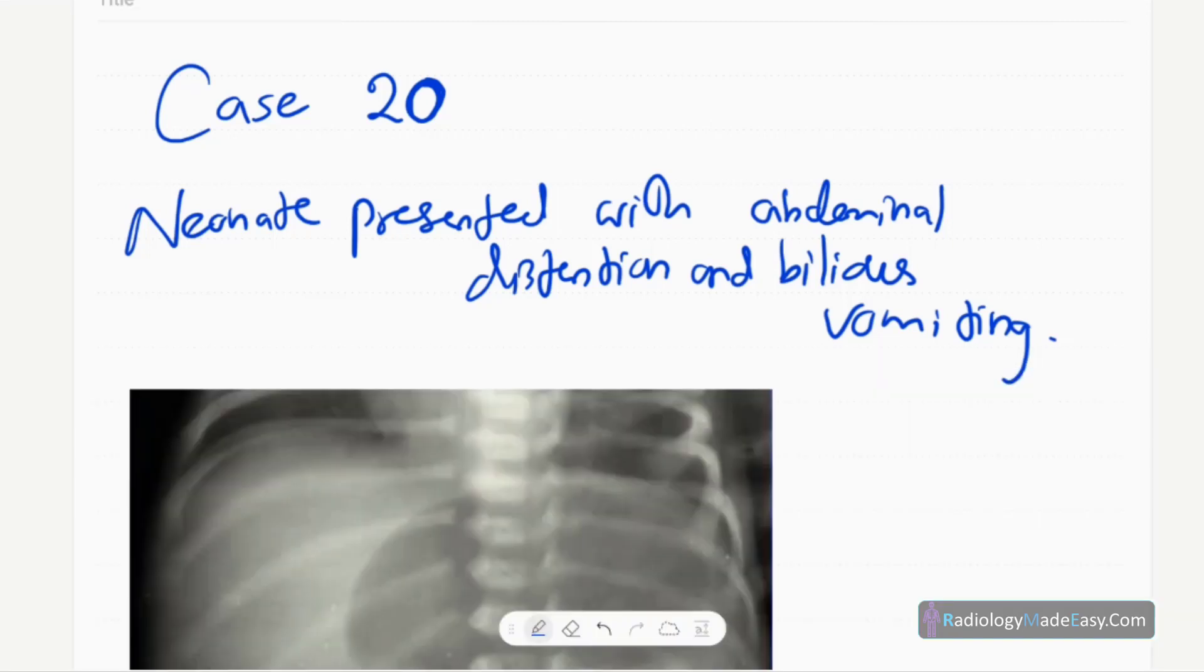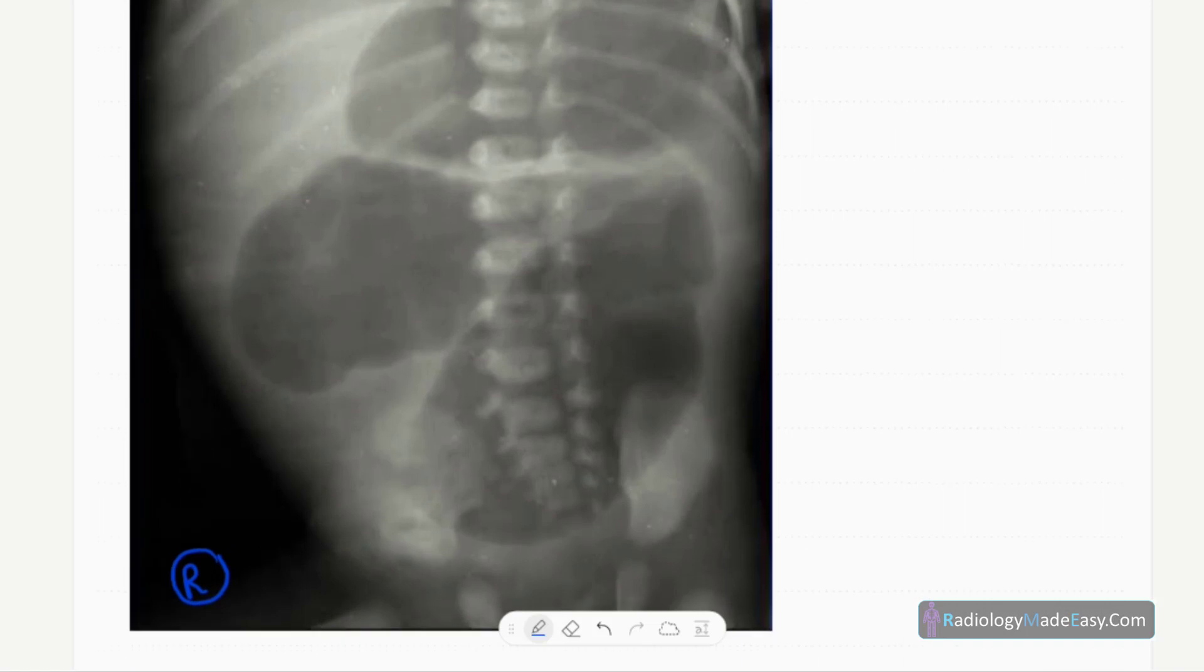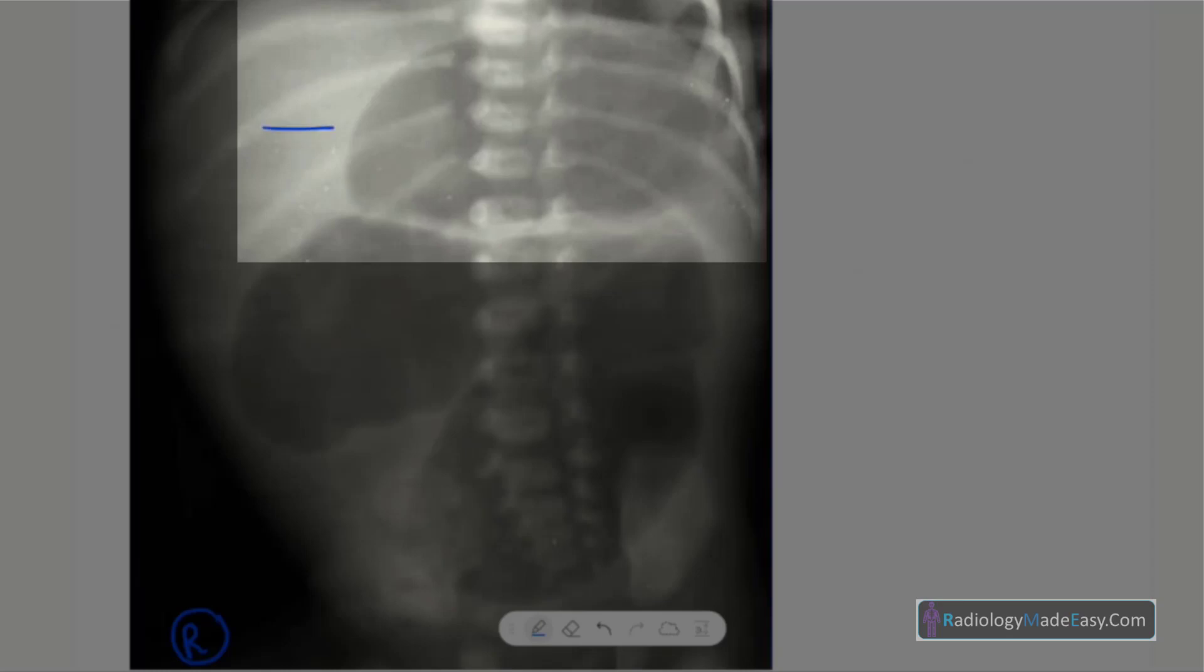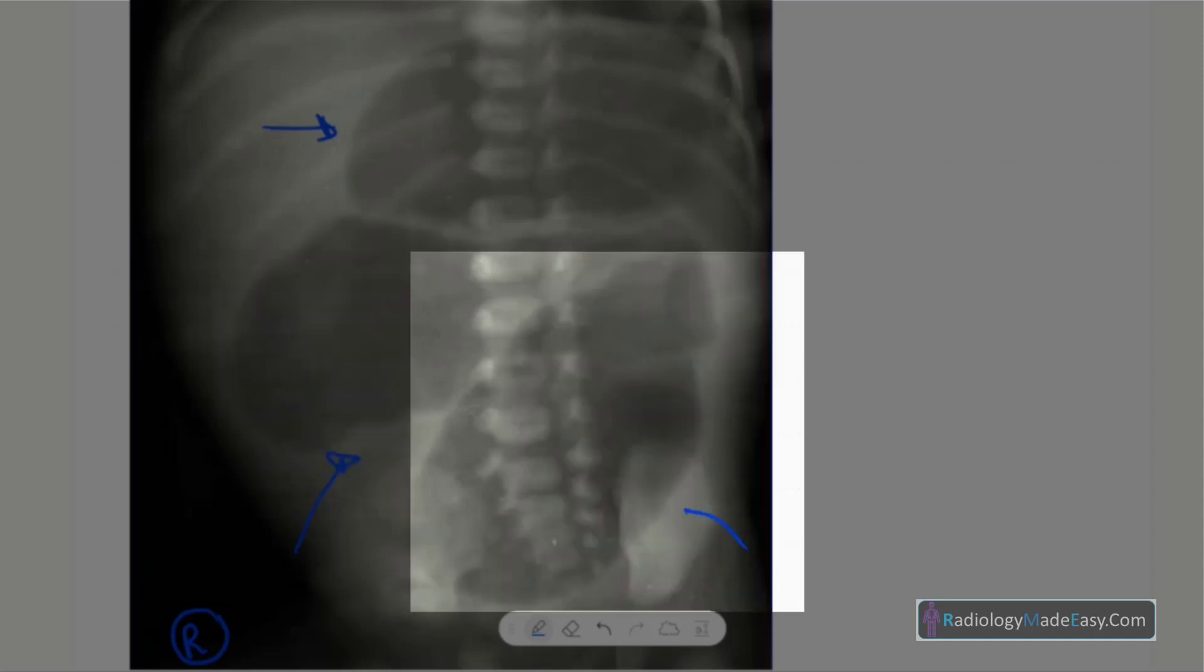and bilious vomiting. This is the anteroposterior radiograph of the abdomen. Here you can see large lucencies - one large lucency, another one, and another one